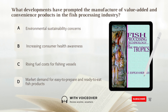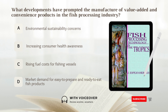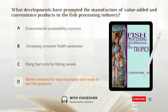What developments have prompted the manufacture of value-added and convenience products in the fish processing industry? A. Environmental sustainability concerns. B. Increasing consumer health awareness. C. Rising fuel costs for fishing vessels. D. Market demand for easy-to-prepare and ready-to-eat fish products. Answer: D. Market demand for easy-to-prepare and ready-to-eat fish products has prompted the manufacture of value-added and convenience products in the fish processing industry.